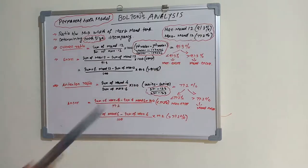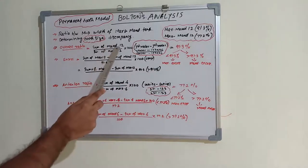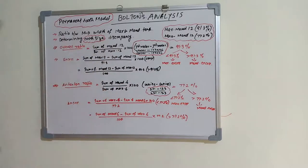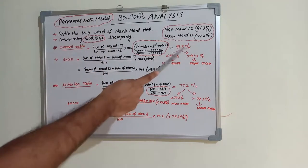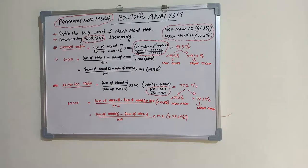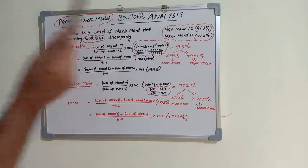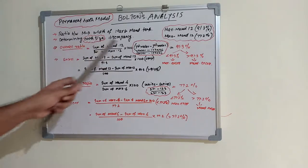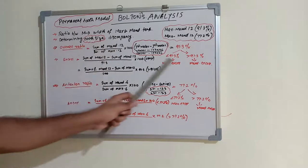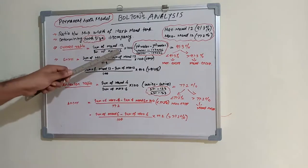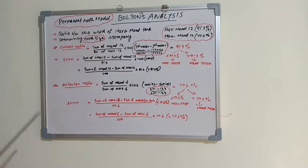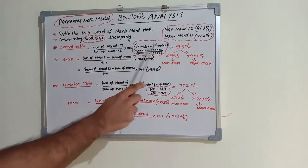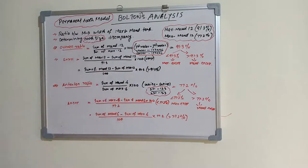If the calculated value is greater than 91.3%, the mandibular tooth material is excess because the mandible is in the numerator. If the calculated value is less than 91.3%, the maxillary tooth material is excess because the maxilla is in the denominator. The overall ratio is calculated from left molar to right molar on both maxillary and mandibular teeth.